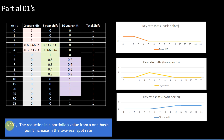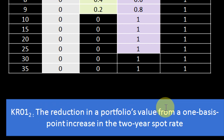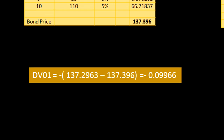When we talk about key rate exposure — for example the two-year key rate exposure — what we mean is the reduction in a portfolio's value from a one basis point increase in the two-year spot rate. Let's now look at a simple example to illustrate this.